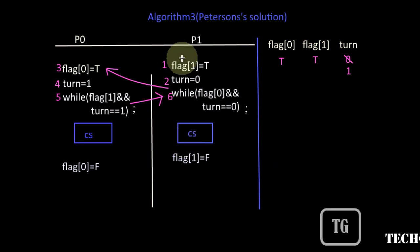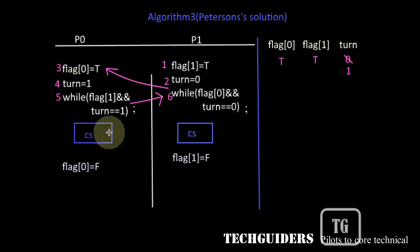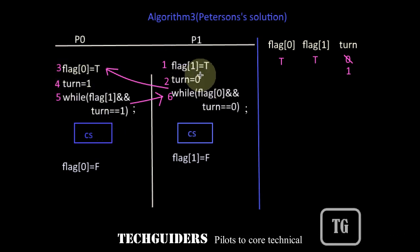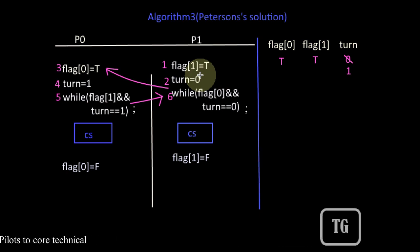Thus, the process which performs the last update on the turn variable will wait there, and the other process which performed the update prior to it will continue with the critical section first.